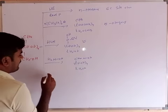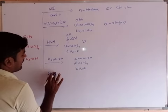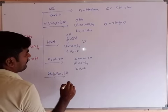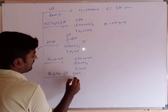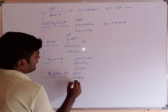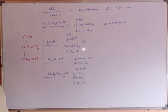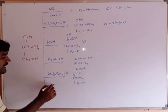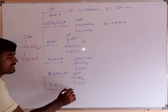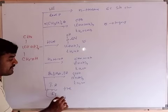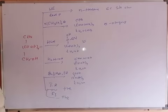Fifth evidence: glucose is oxidized by a mild oxidizing agent such as Br2 water. The carbonyl carbon is converted to a carboxylic acid (COOH), forming gluconic acid. This confirms the presence of the aldehyde group in the open chain structure. Glucose also gives a positive test with Tollens' reagent and Fehling's solution.